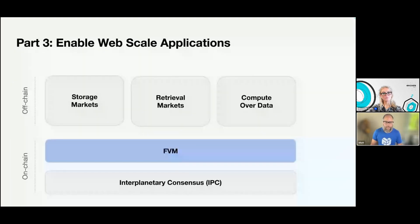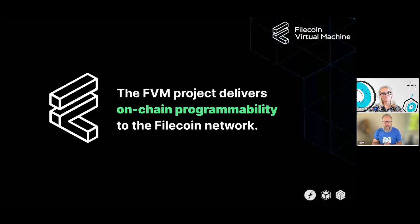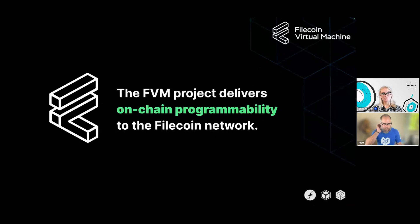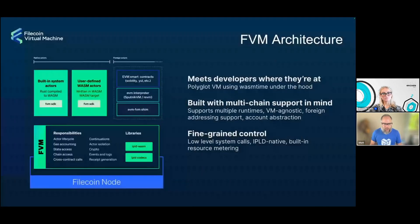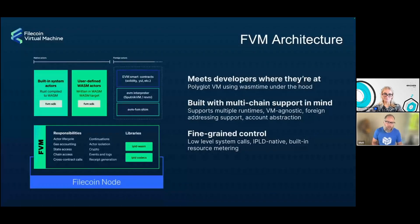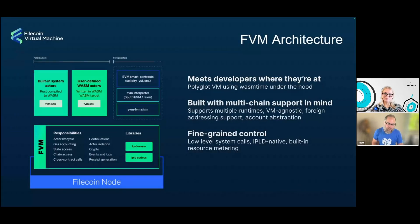So FVM — how does FVM fit into all of this? The Filecoin Virtual Machine project delivers on-chain programmability to the Filecoin network. Sarah is going to go into more details about where it is and where it's going, but just to give a brief overview of the architecture: the FVM is a polyglot VM — a multilingual VM using wasm time. On top of that we have the initial runtime, the EVM runtime — FEVM — that runs on top of that and allows you to use Solidity, for example, and deploy existing Solidity smart contracts on top of the Filecoin network. We're also looking at additional virtual machines as well. In the future there could be runtimes from things like Flow or Solana on the network as well.